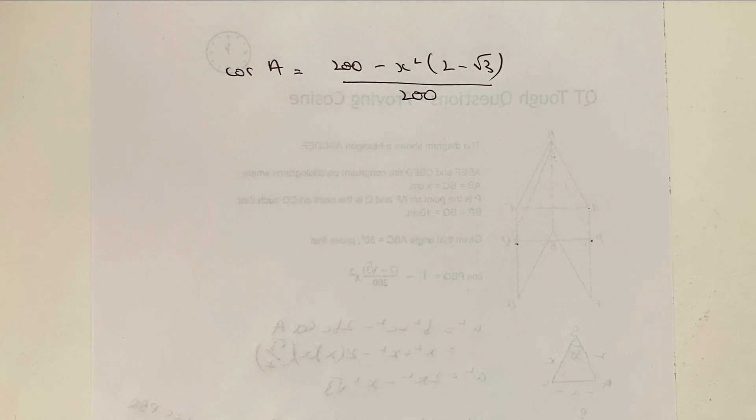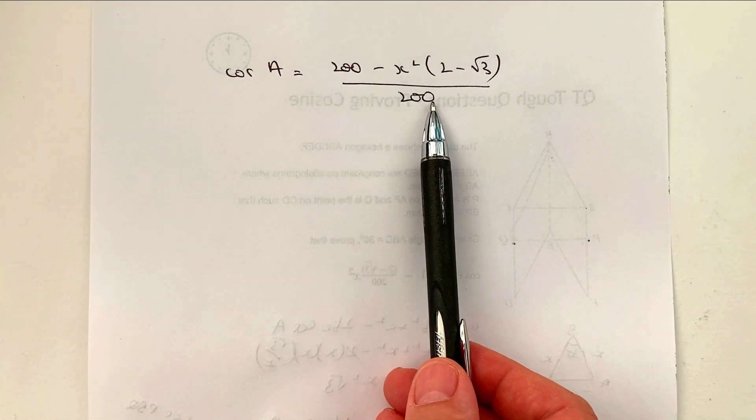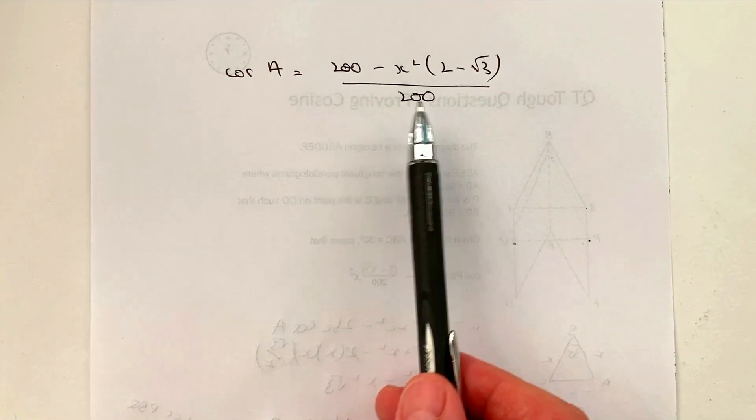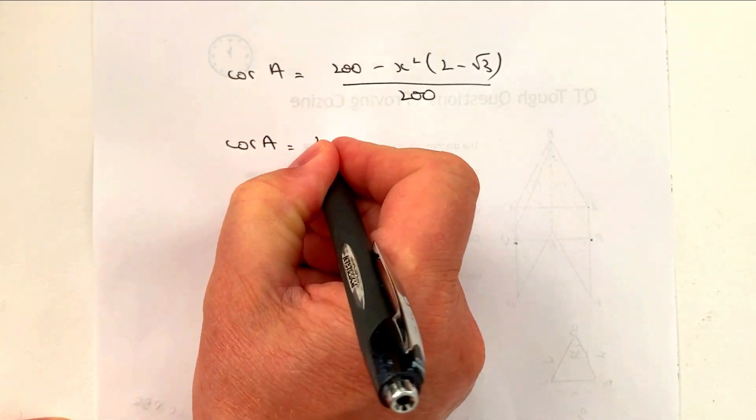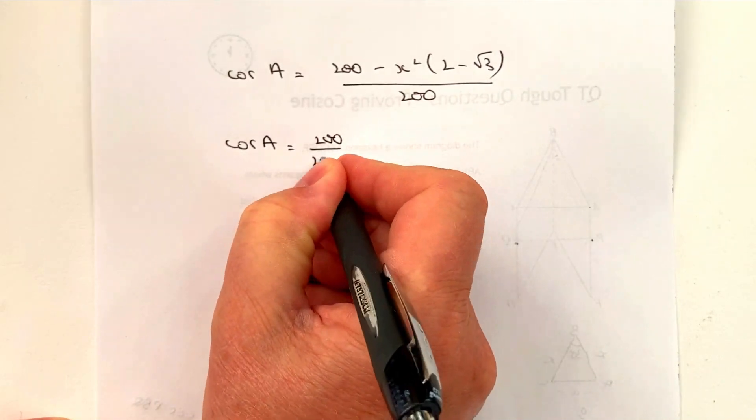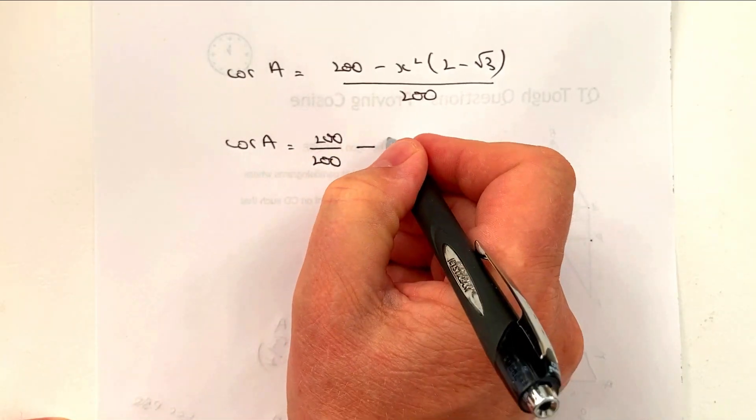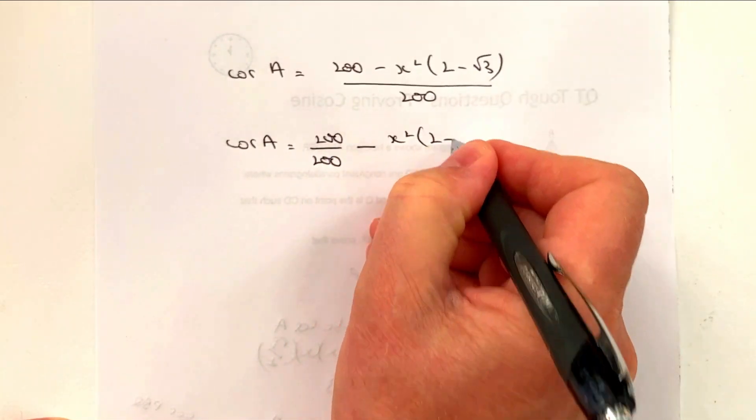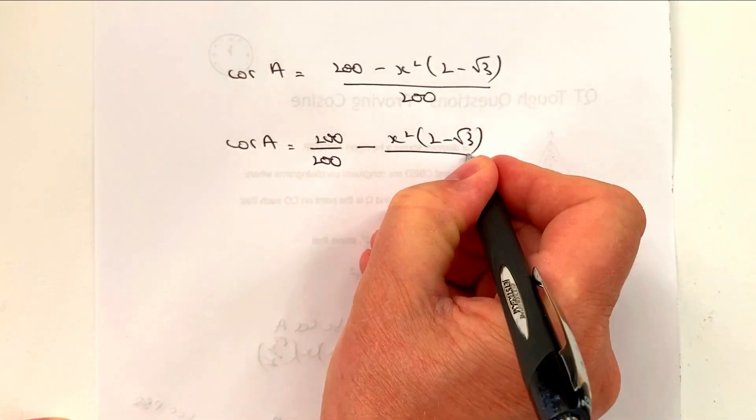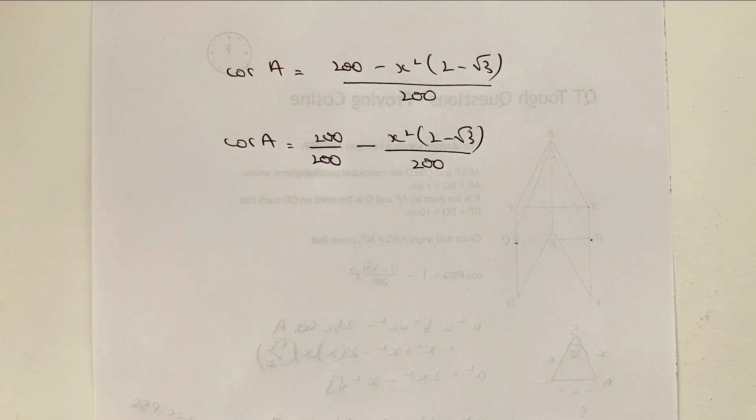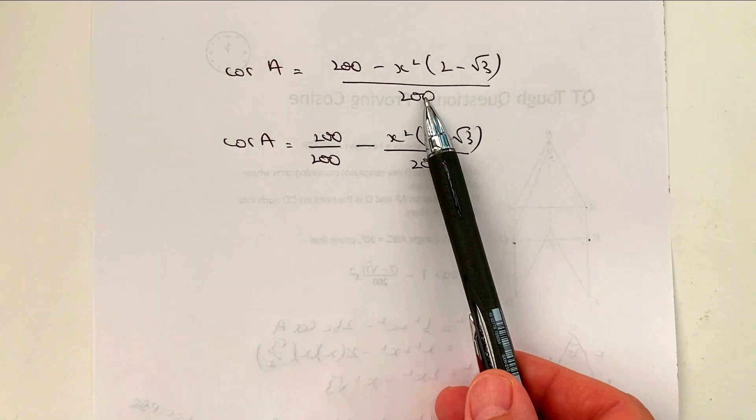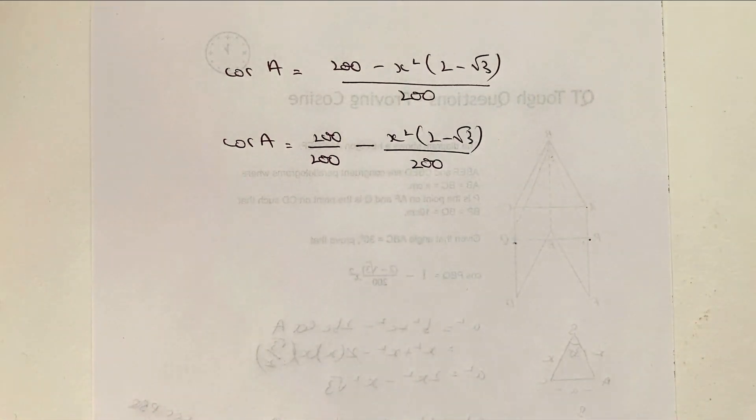Well, if you're dividing by this new denominator here, then I can rewrite this as being the same as saying cosine A equals 200 divided by 200 minus x squared 2 minus root 3. Again, all divided by 200. Okay, well, because effectively that 200 divides both of those.